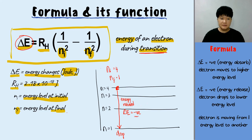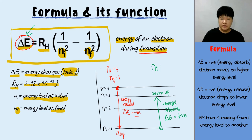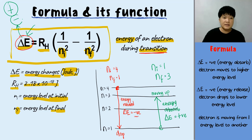Everything is vice versa when the electron moves up. If the electron is at N equals 1 and moves up to N equals 3, energy will be absorbed. When energy is absorbed, delta E should be a positive value. Delta E is positive because N initial is 1 and N final is 3. When moving to a higher energy level, you always need more energy; going down releases energy. So delta E can be positive or negative depending on the initial and final.